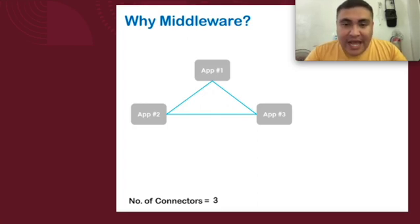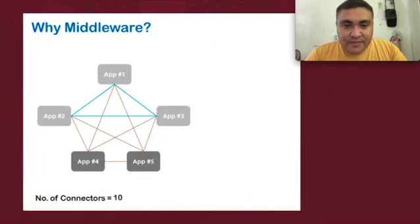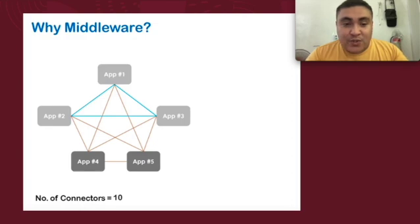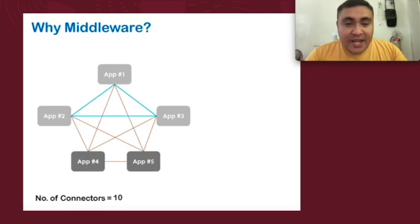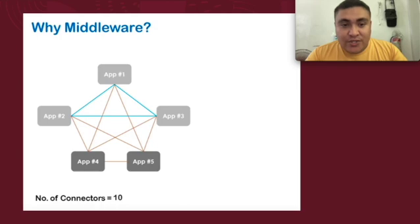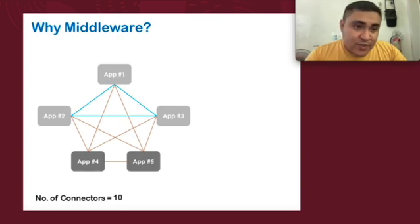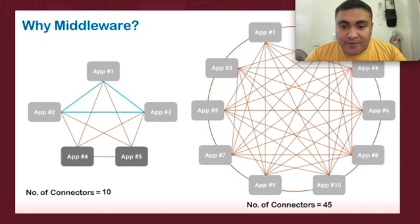For this example we have three connectors used in order for them to be integrated. Now imagine if we add another two applications — the number of connections will also increase. This kind of scenario presents complexity among applications. For example, application one needs to learn how to adapt with applications two, three, four, and five in order for it to be interconnected among all of them.